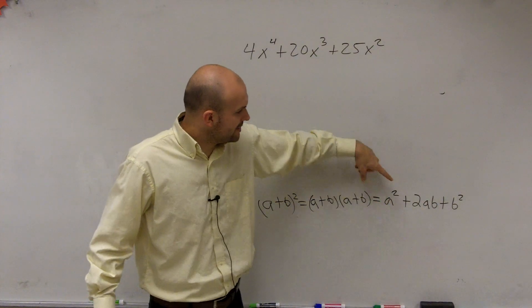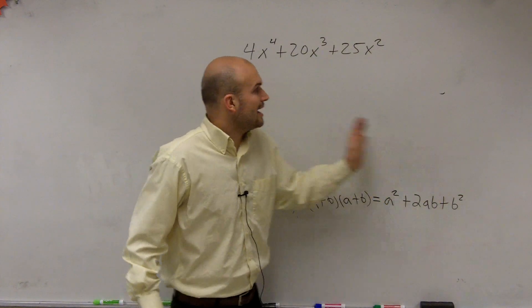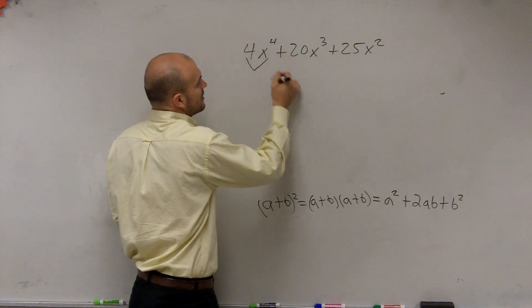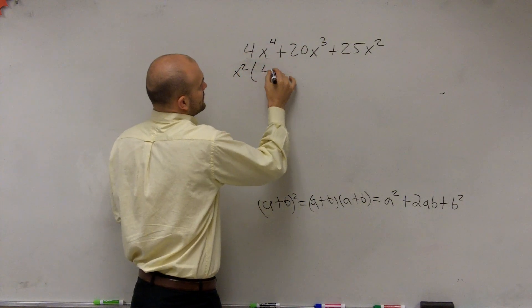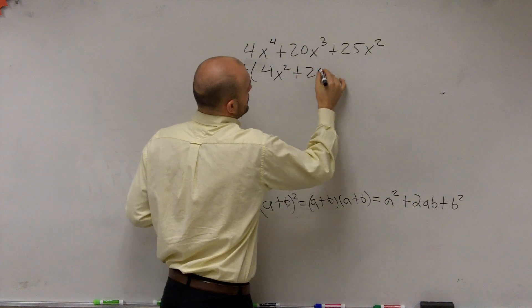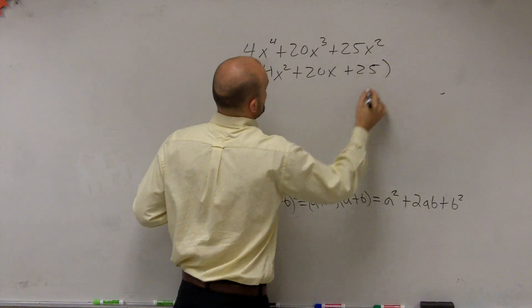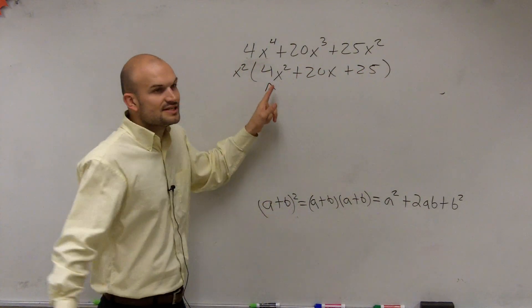If I look at this, and if I know a squared plus b squared, I look at these two terms. Is this a, first of all, let's factor out an x squared. So we're left with 4x squared plus 20x plus 25. Is this a squared term?